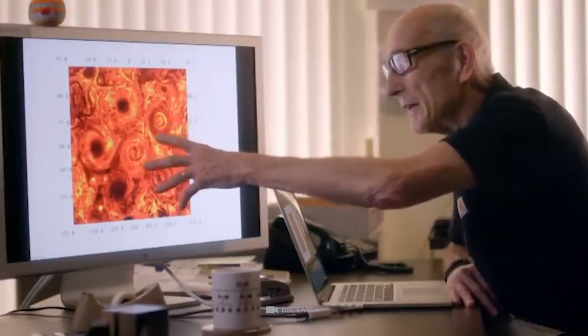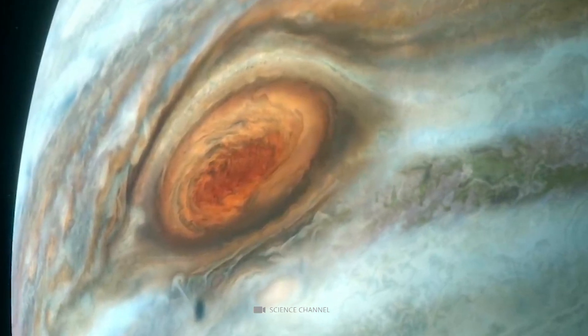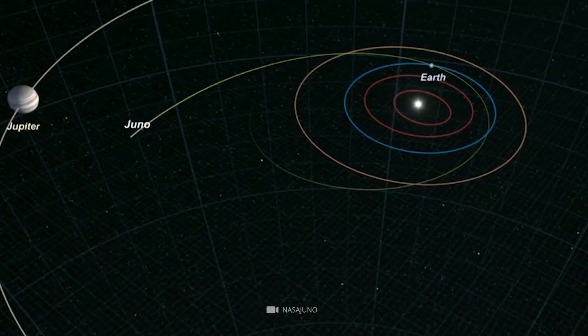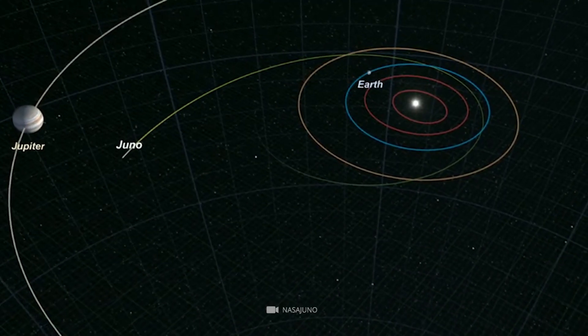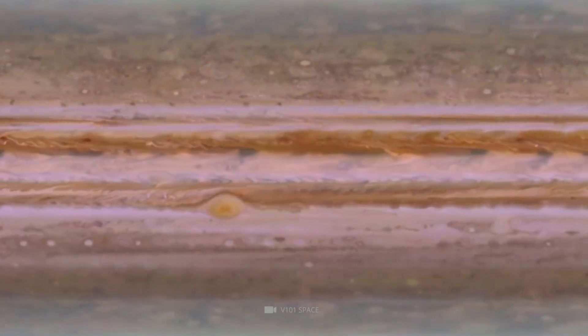Another image shows a group of cyclones seemingly swirling around in a mesmerizing dance, captured in great detail by the JunoCam. The image was taken from about 18,000 miles or 28,567 kilometers above the cloud cover. The outer clouds in the cyclones seem to be moving counterclockwise, while the inner ones do the opposite.